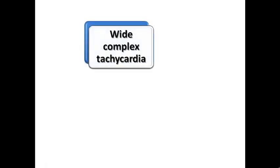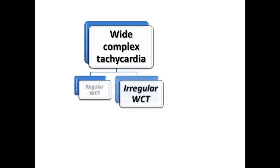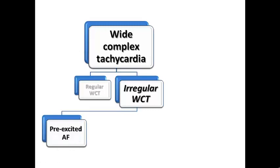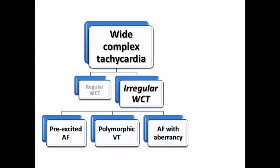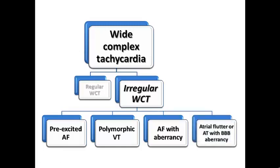Let's start by giving the possibilities of wide complex tachycardia. We divide them into regular and irregular. Regarding irregular wide complex tachycardia, the first possibility that comes to mind is pre-excited AF, which is a very important and life-threatening diagnosis. There is also polymorphic VT, AF with aberrancy (either left or right bundle branch block), and the less common atrial flutter or atrial tachycardia with bundle branch block appearance, which can present with irregular rhythm in cases of variable AV conduction.